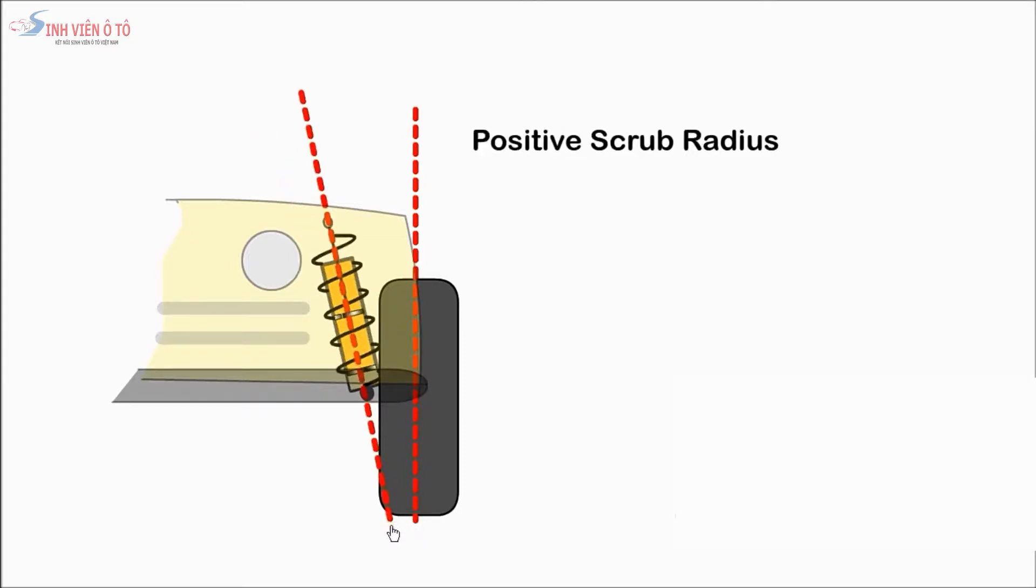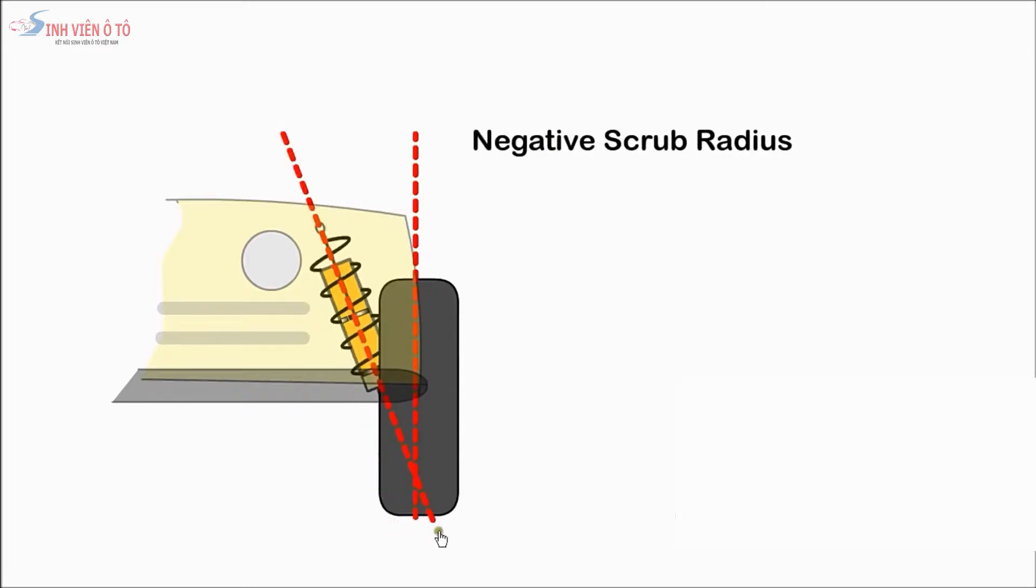Braking on this wheel will tend to turn it outwards. When the steering axis point is towards the outside of the wheel, it's called negative scrub radius. Braking on this wheel will tend to turn it inwards.